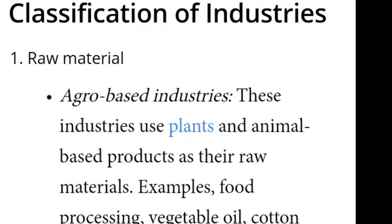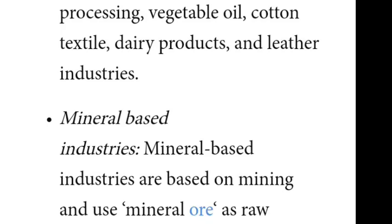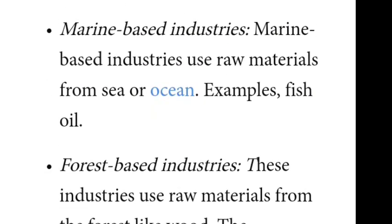There are different types of industries based on raw materials: agro-based industries, mineral-based industries, marine-based industries, and forest-based industries.